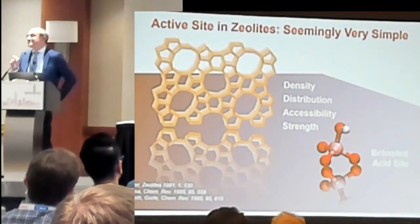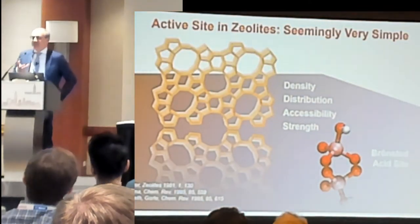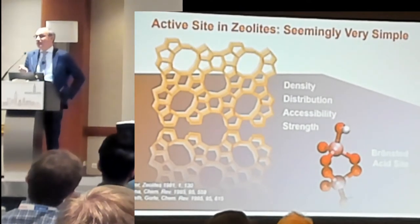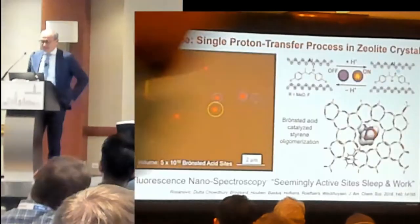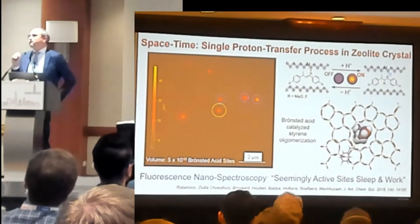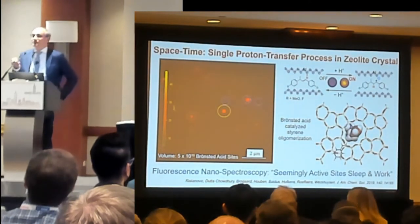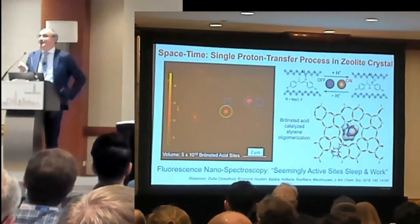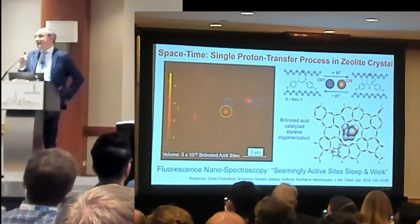Take this as an example: a zeolite, where we know the crystallographic structure with well-defined T sites. If you want to access this material, you can use advanced methodologies, and I will show you one of them — single molecule fluorescence. Every flash is a molecule which reacts at a Brønsted acid site, makes a fluorescent molecule, and that is what you see. Now for those who noticed the number of flashes, there was not that much. That means that many of these sites are seemingly, under these conditions of room temperature, not active — they are seemingly sleeping.